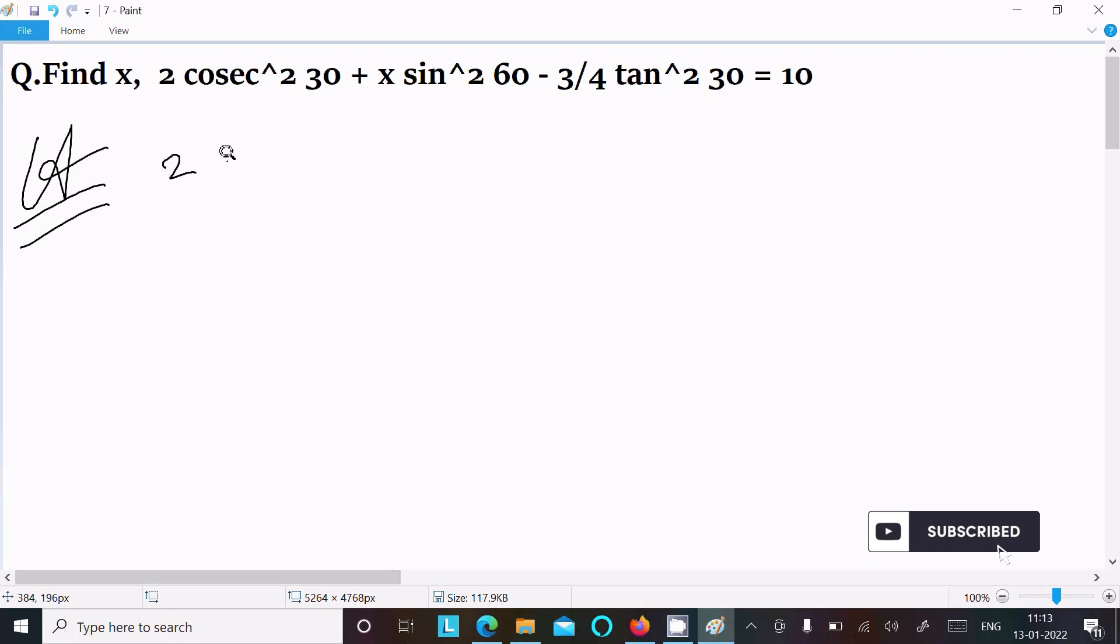Here, writing the given equation once again: 2 cosec² 30 + x sin² 60 - 3/4 tan² 30 = 10.